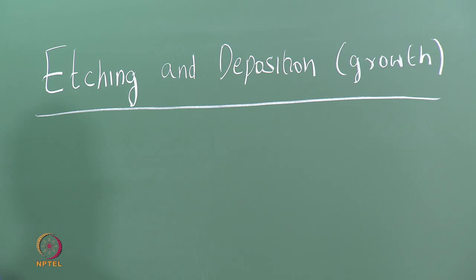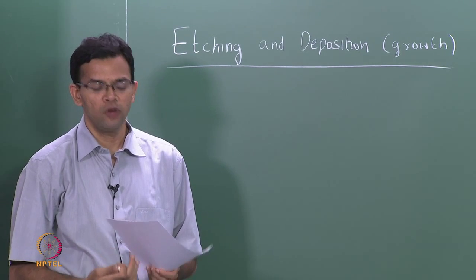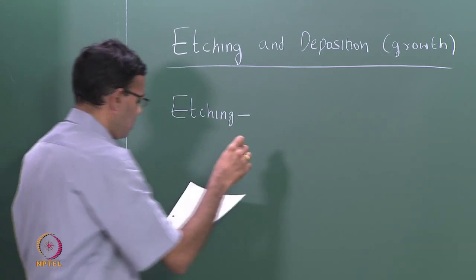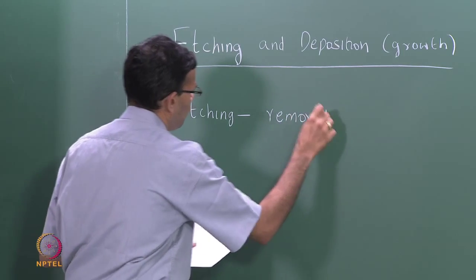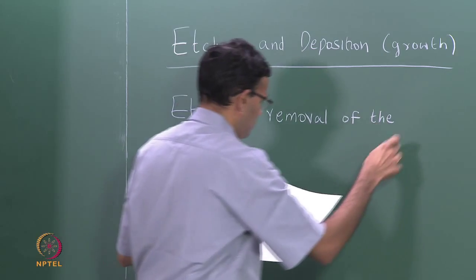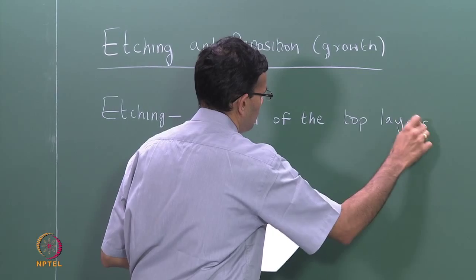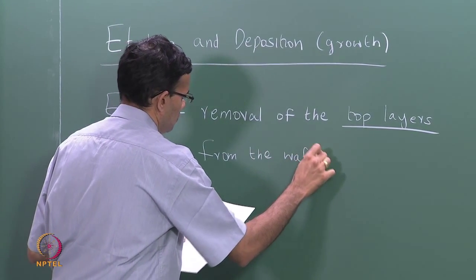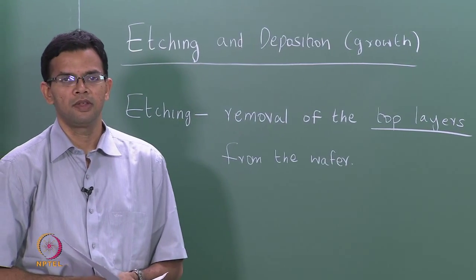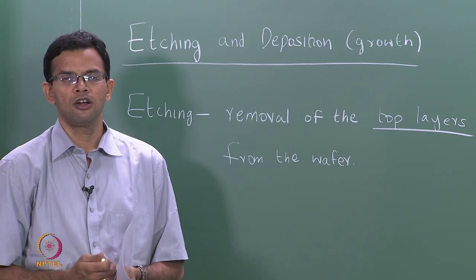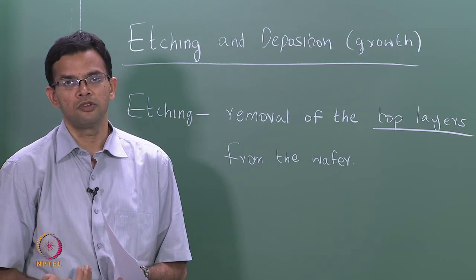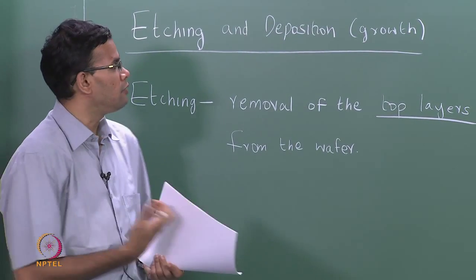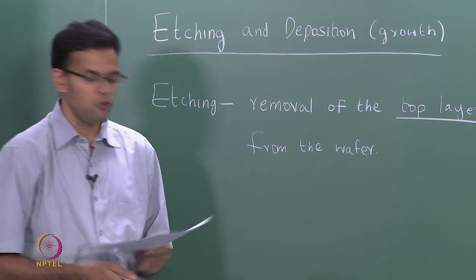We will first look at etching and then move on to growth. Etching can be defined as the removal of material from the top of the wafer, or removal of the top layers from the wafer. Etching is usually combined with lithography so that lithography is used to expose certain portions of the wafer which are then removed. There are essentially two main types of etching.